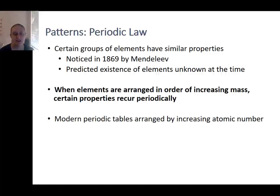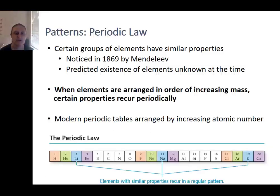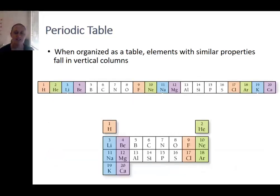Modern periodic tables arrange the ions by increasing atomic number, which is the number of protons associated with each element. The idea is that elements with similar properties are going to recur in a repeating pattern. When we arrange the elements as a table, we end up with elements which have similar properties falling into the vertical columns.